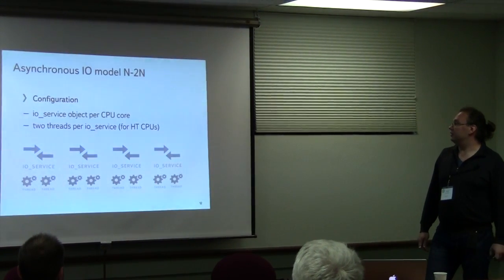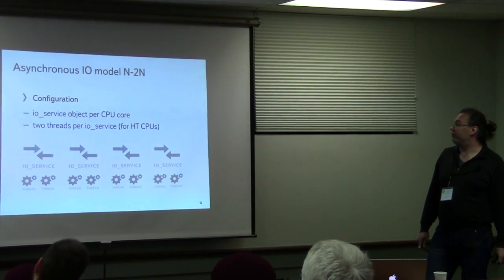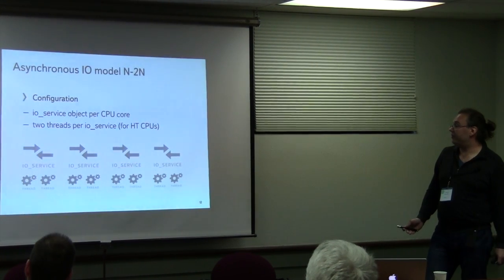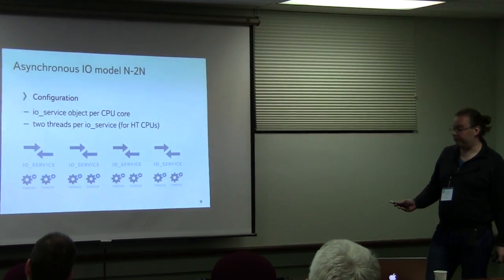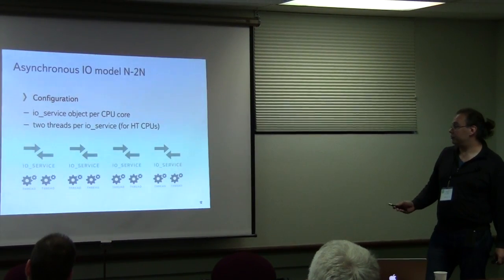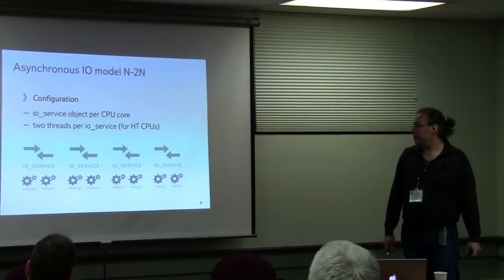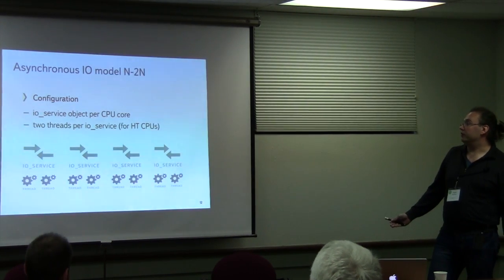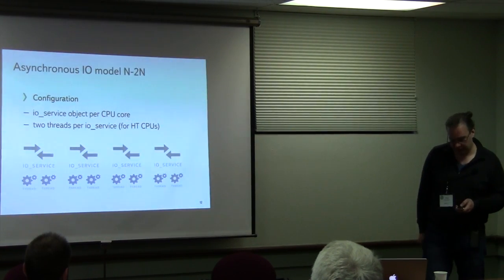This model is the combination of the previous two models. Here we have one IOS service object per CPU core, but two threads per IOS service. We made it for hyper-threading CPU utilization. We thought that this model would give us greater performance than the previous two.